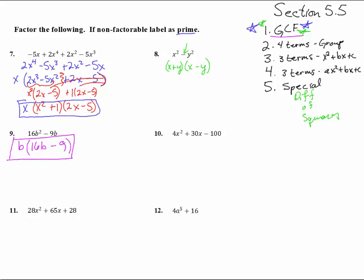Number 10. Let's look at this guy. Here we have 4x squared plus 30x minus 100. Yeah, that looks like a perfect square, perfect square, but we better check, see if we've got a greatest common factor first. Pull out a 2, and we get 2x squared plus 15x minus 50.